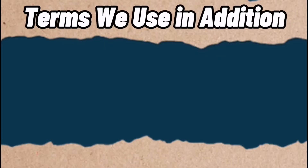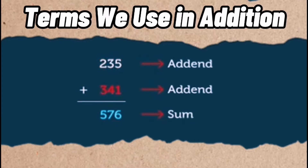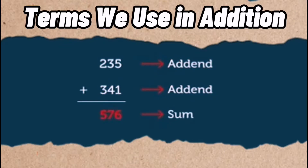Do you know the terms used for the numbers in an addition? The numbers that we add are called addends, and the answer we get after adding the numbers is called the sum. Here, 235 and 341 are addends, and 576 is the sum.